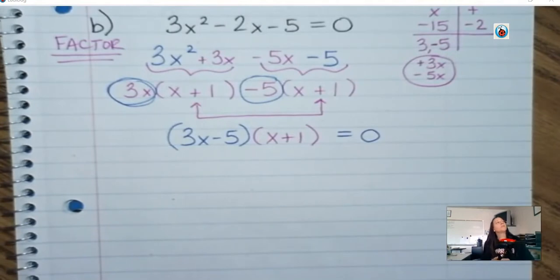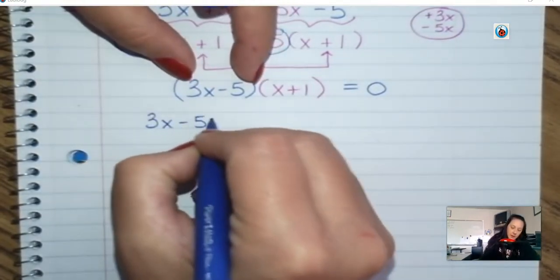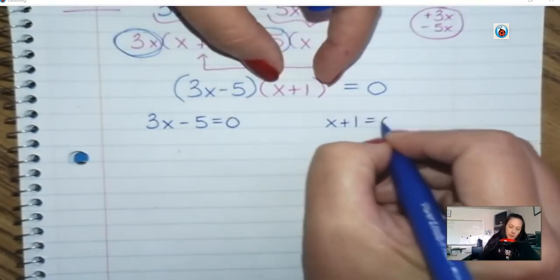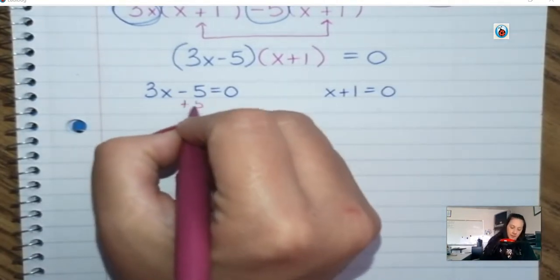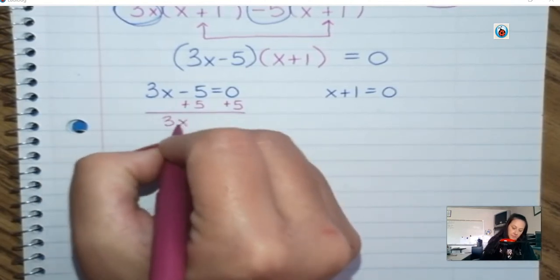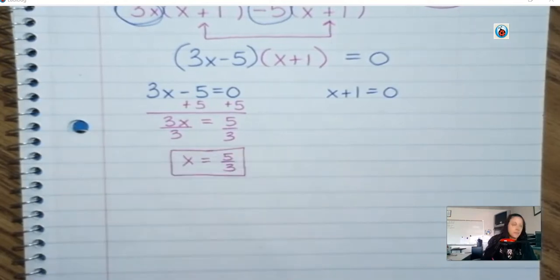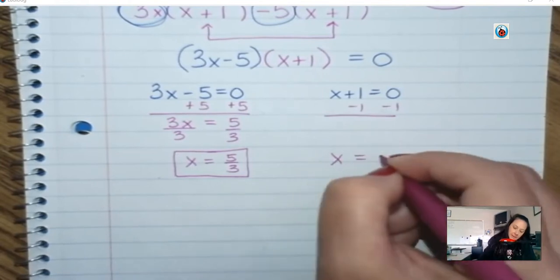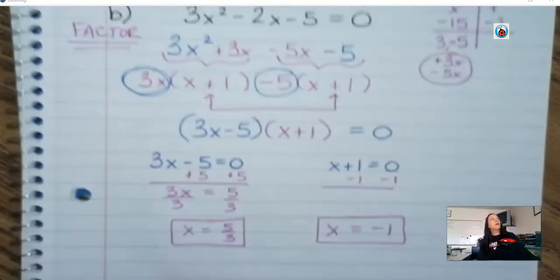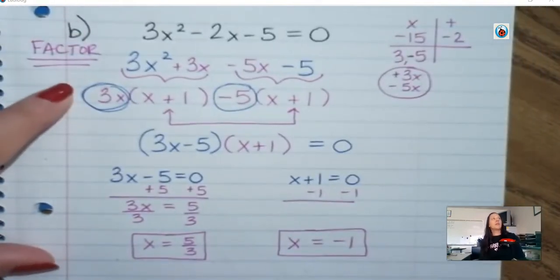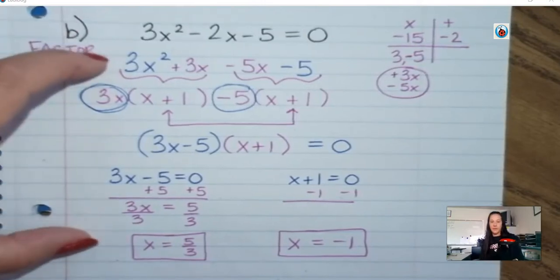Set this equal to 0. Take both factors and set them equal to 0 and solve: 3x minus 5 equals 0 and x plus 1 equals 0. Add 5 to both sides, then divide by 3 — x is 5 thirds. And this side subtract 1 — x is negative 1. For a question like this, I probably would not factor personally, just because this is a whole lot of work. I know that doing the quadratic formula I can usually do that more quickly. So we're going to do this question again but using the quadratic formula.